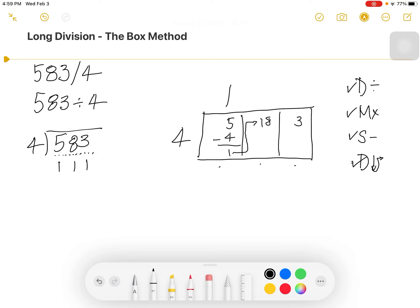So now we have 18 in our second box. We start the process all over again. That process is divide. 4 divided into 18 is 4.